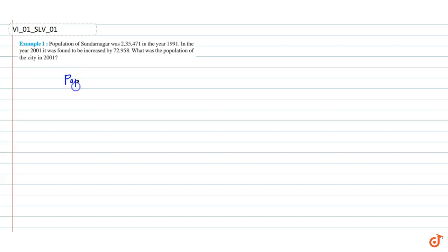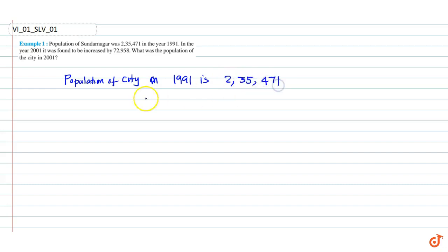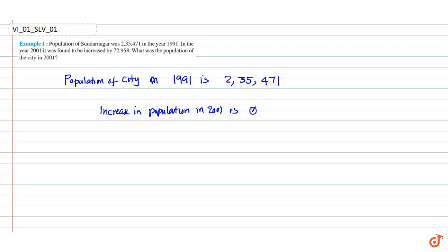We know that the population of the city in 1991 is 2,35,471. The increase in population in 2001 is 72,958.